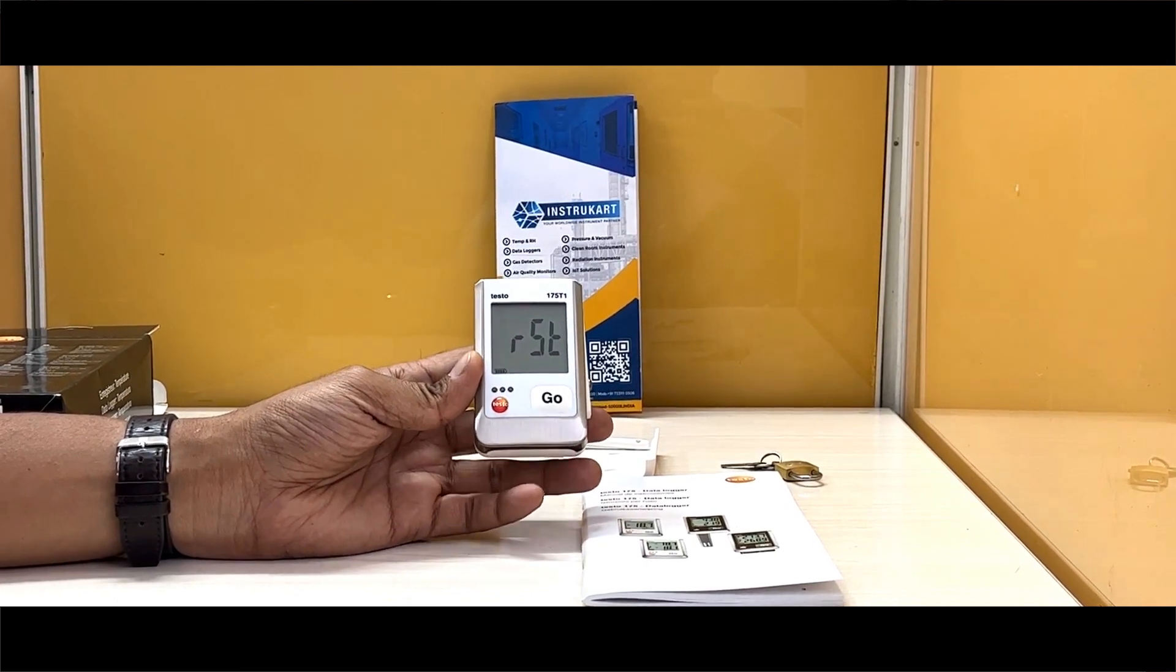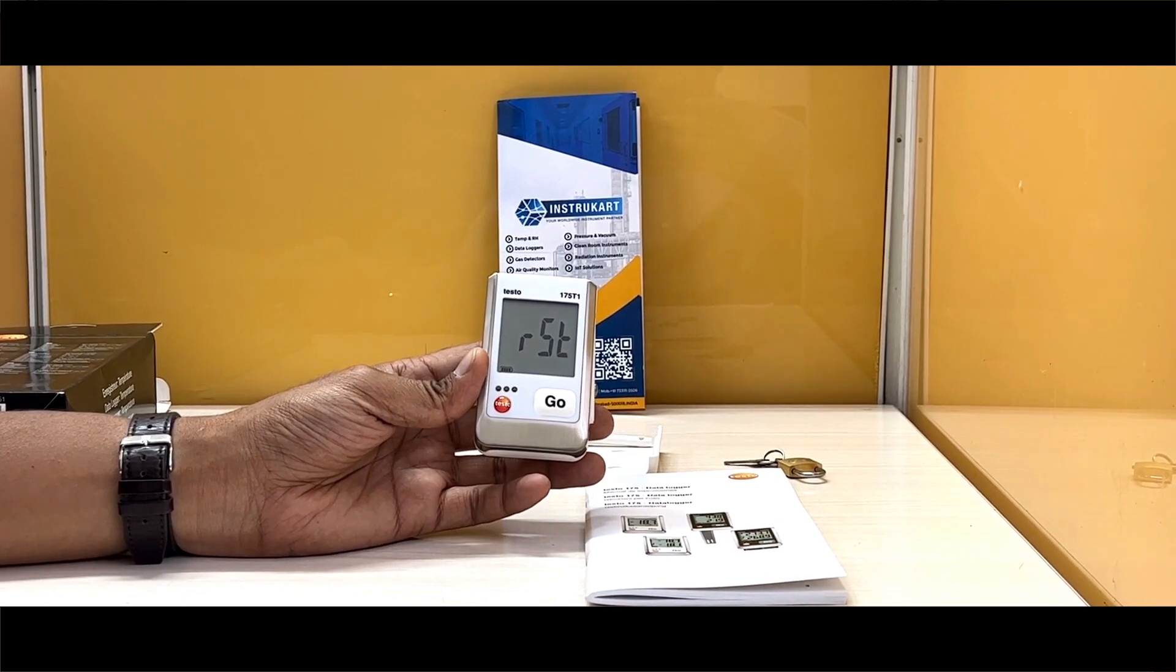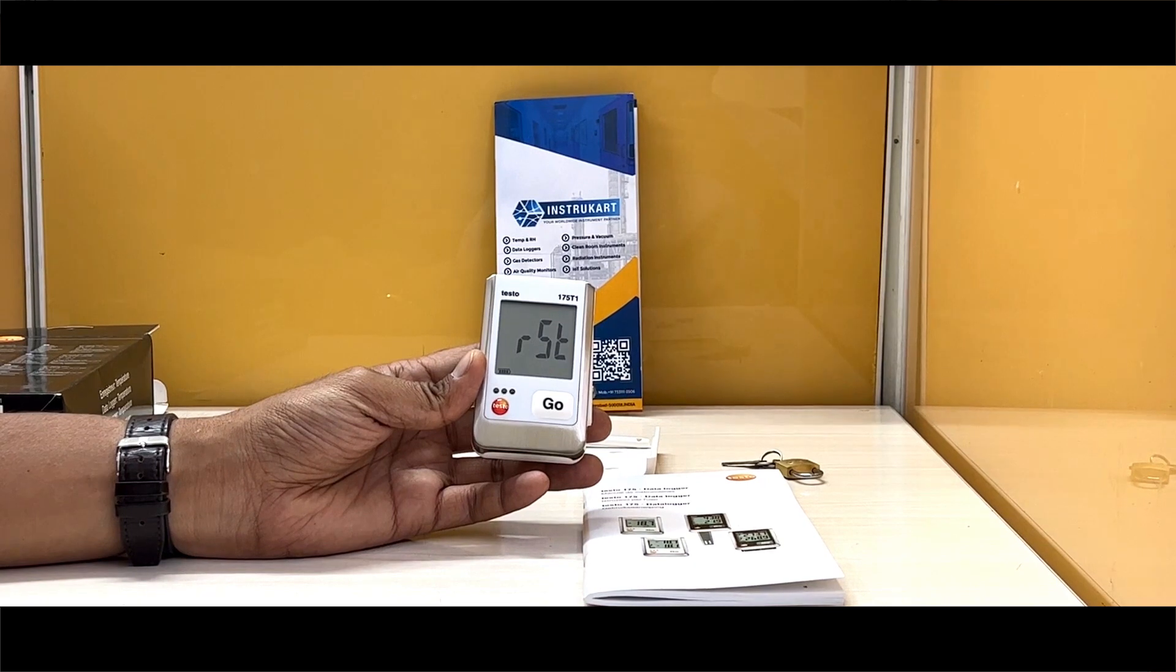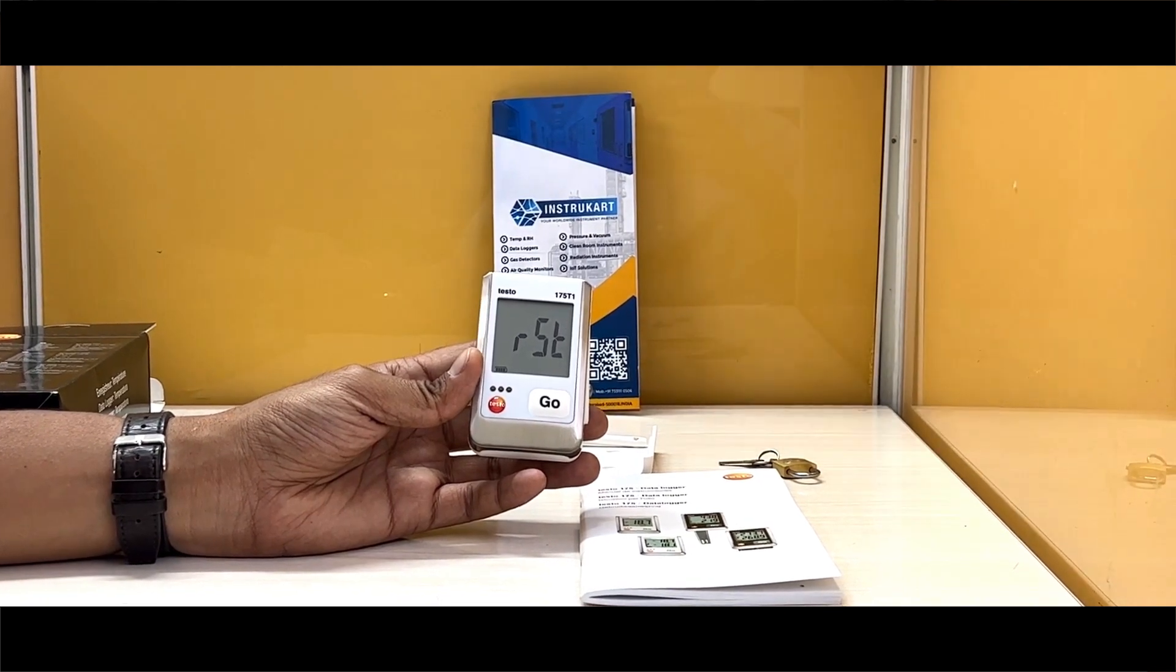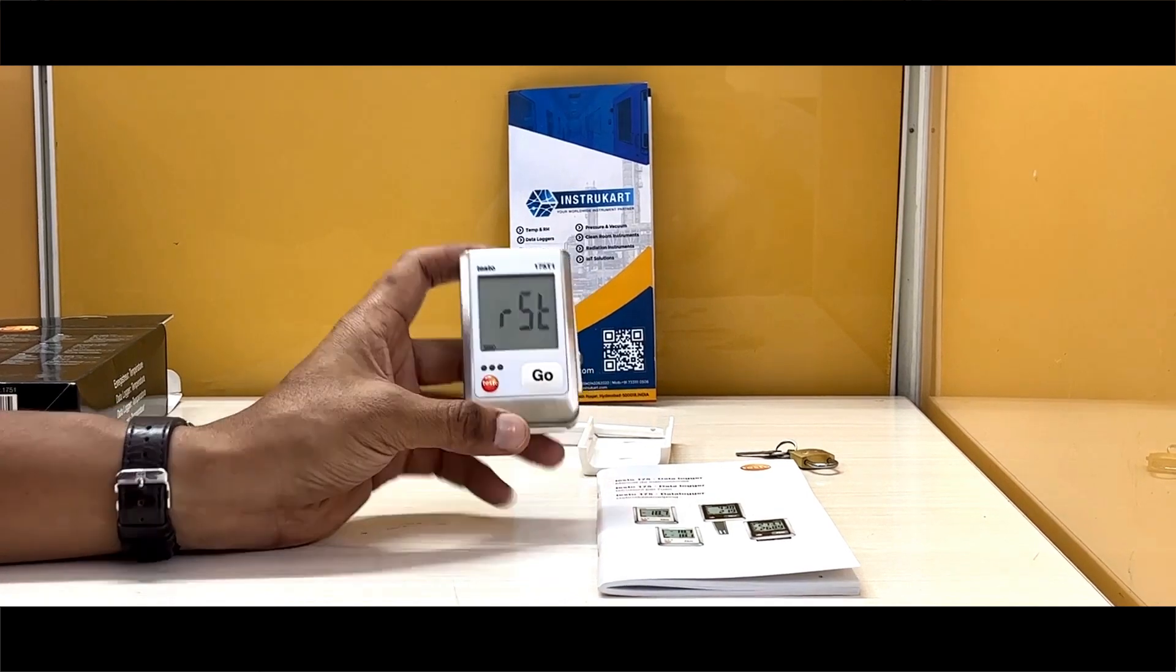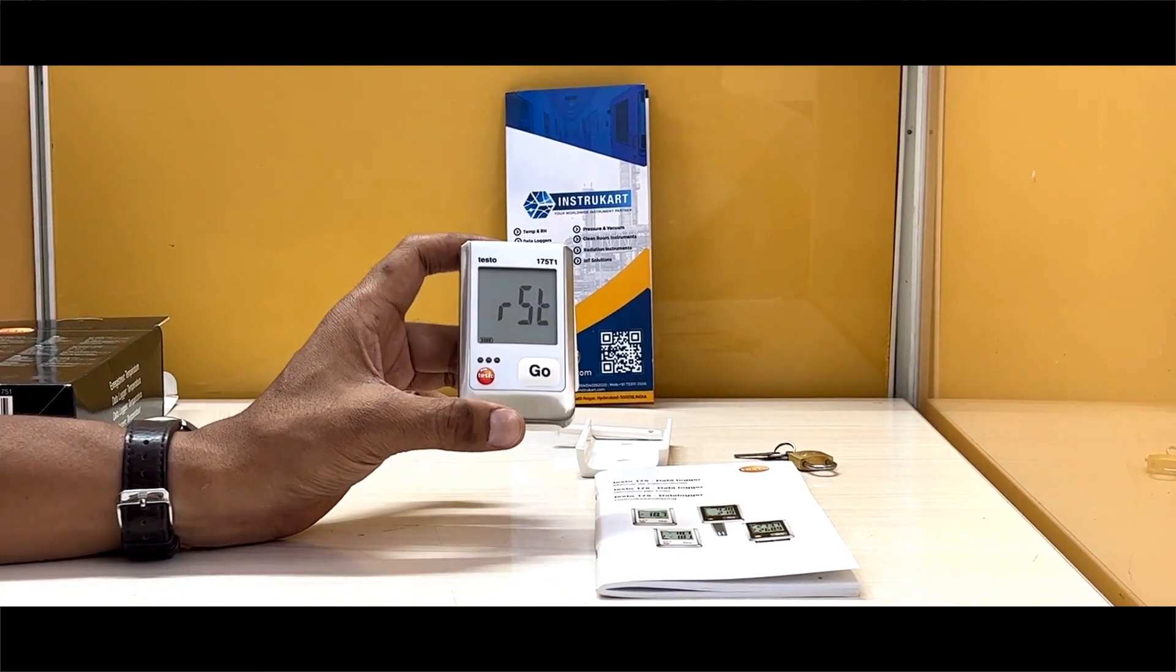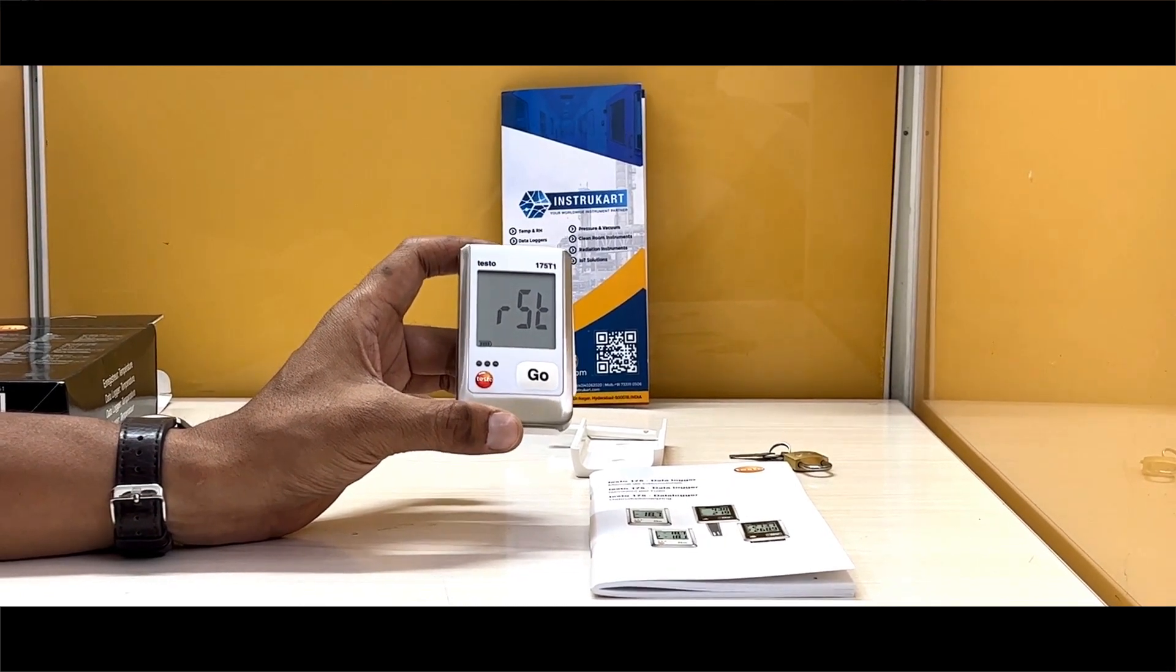The range for this data logger is minus 35 to 55 degrees Celsius with a resolution of 0.1 degrees Celsius and an accuracy of plus or minus 0.4 degrees Celsius. It has a data logging option which can capture up to 1 million readings, and the measuring rate could be 10 seconds to 24 hours.